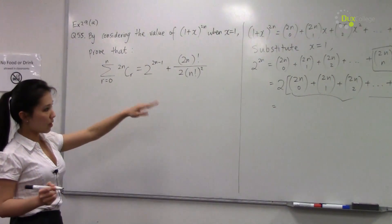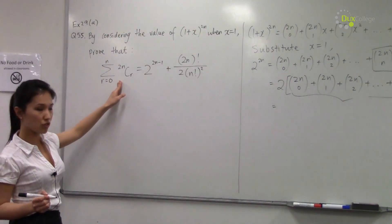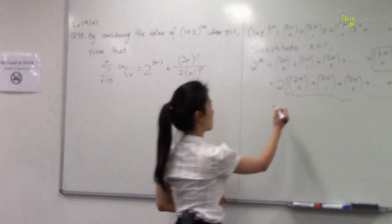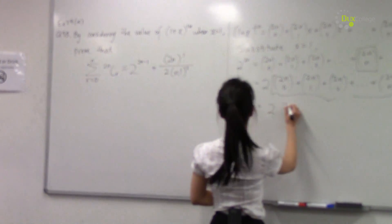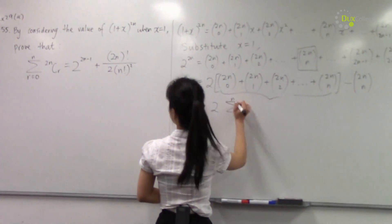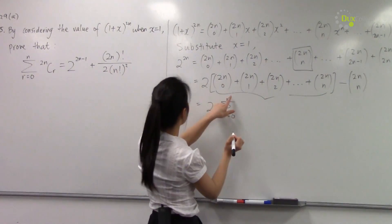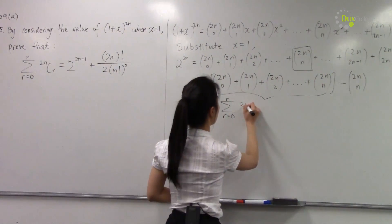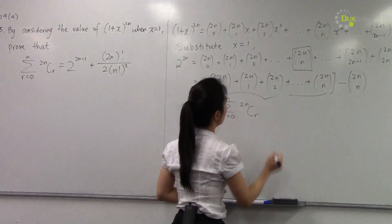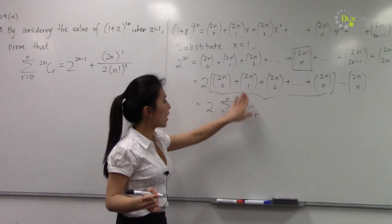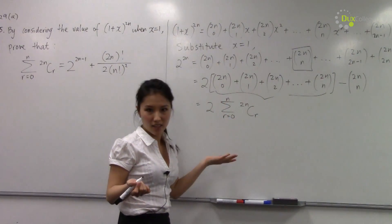So that part is equal to this sigma expansion. So I'm going to rewrite this as 2 times the sum from r equals 0 to n of 2n choose r. Notice I've actually changed my notation here but they are exactly the same.